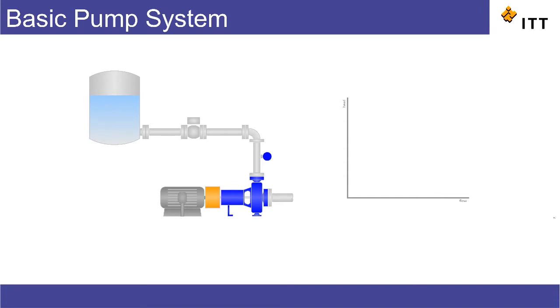There's a difference in elevation between the pump and the tank, so that makes up the static head which is shown by the constant green line on the flow versus head curve on the right. In addition, you've got the friction losses in the line which increase as the flow increases.